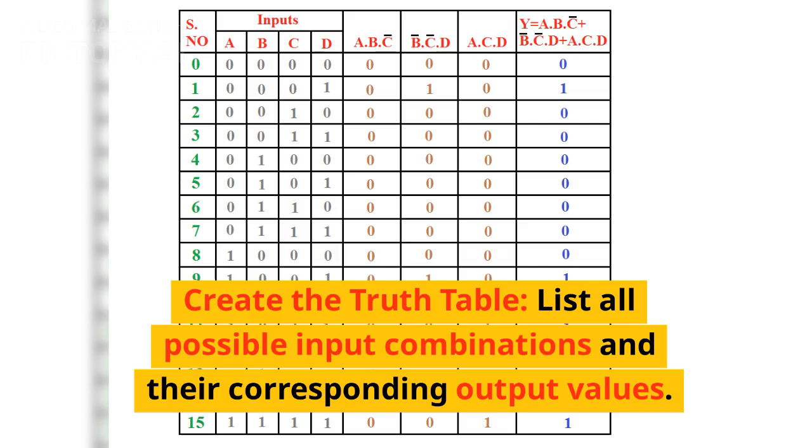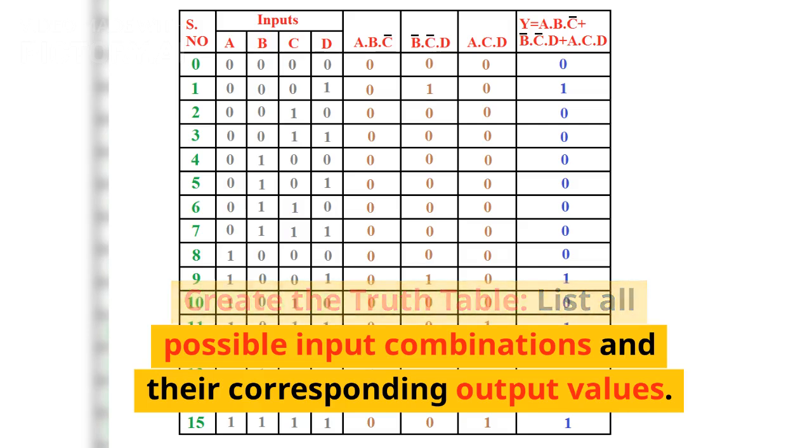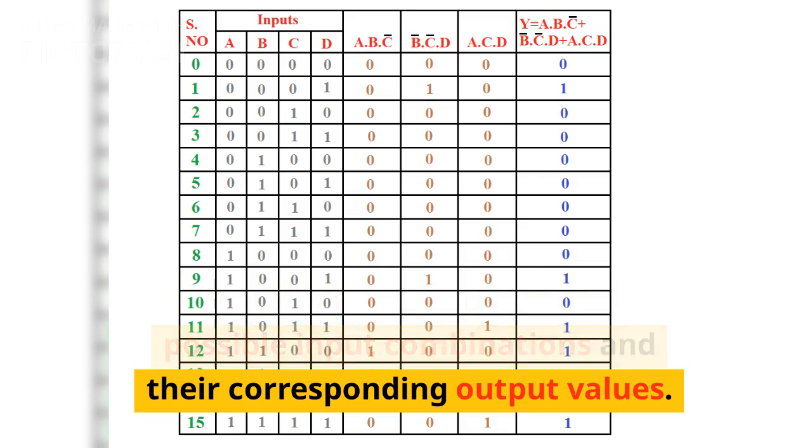Create the truth table: list all possible input combinations and their corresponding output values.